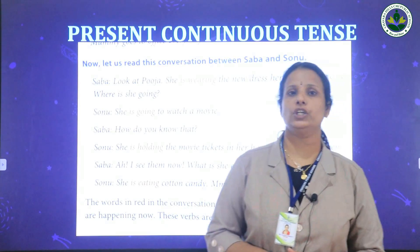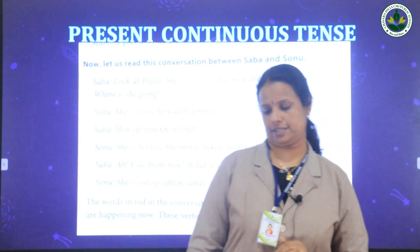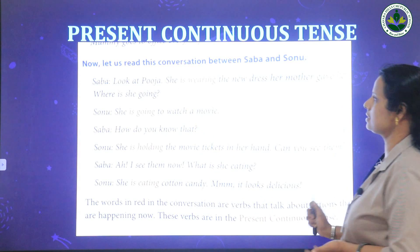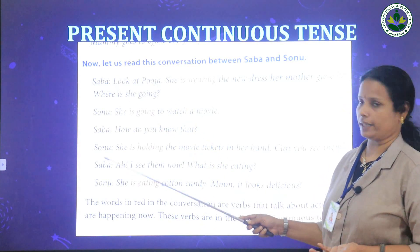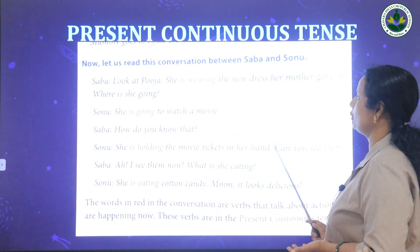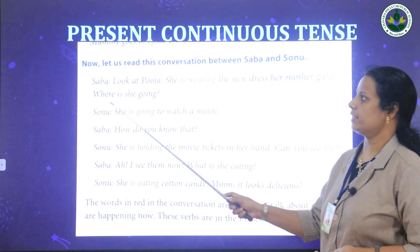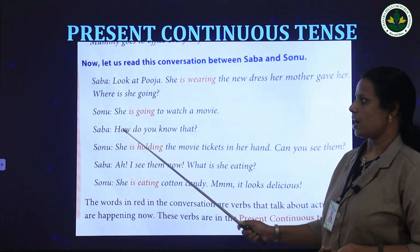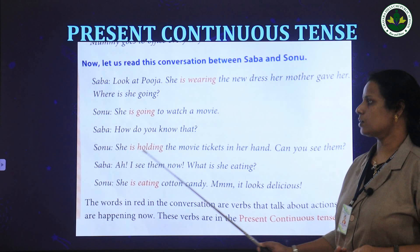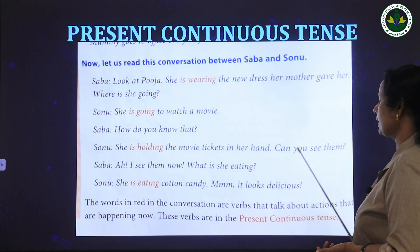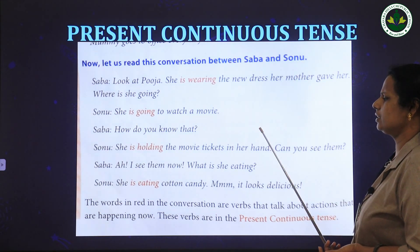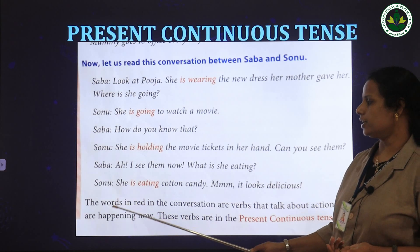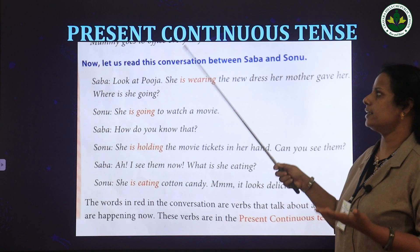Now let's read a conversation to understand present continuous tense. Sabba: 'Look at Puja, she is wearing the new dress her mother gave her. Where is she going?' Sonu: 'She is going to watch a movie. She is holding the movie tickets in her hand. She is eating cotton candy.'